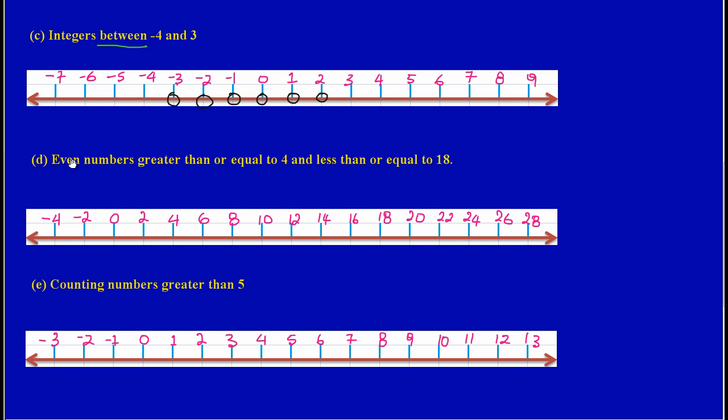Now in part d we're asked to graph even numbers greater than or equal to, so this is a key term that we're focusing on, greater than or equal to four or less than or equal to 18. Now if you notice on this number line, I am going up in increasing in units by two. So I'm from start from zero to four six eight I'm going up by two because I'm dealing with even numbers. So always draw your number line to suit the kind of information that you're dealing with to represent that information.